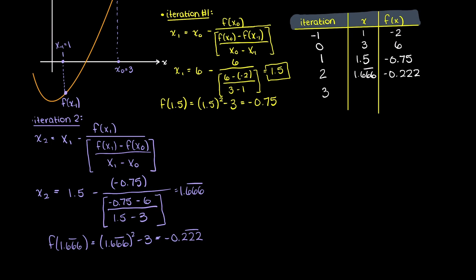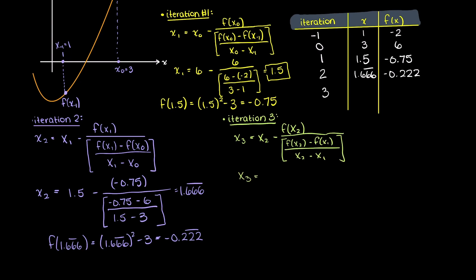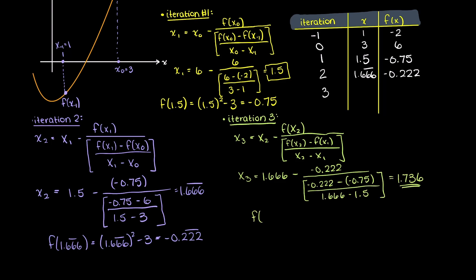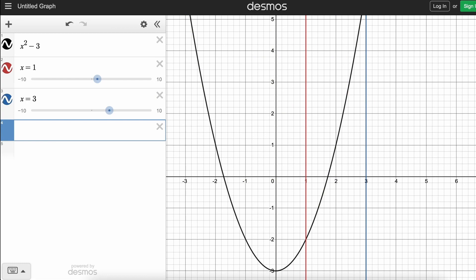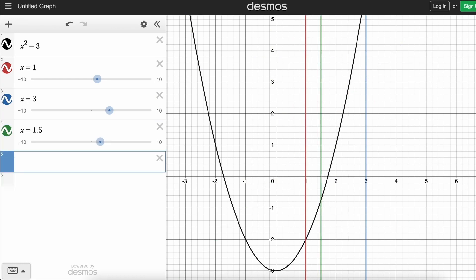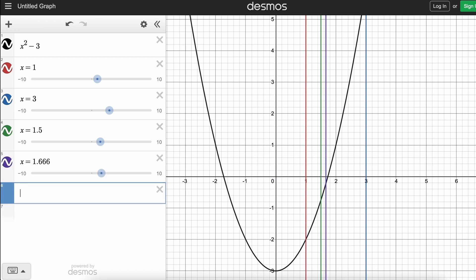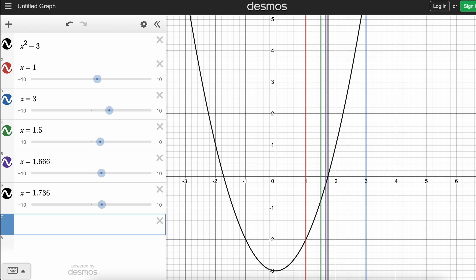Then for our final iteration we will do the same thing. Filling in all our variables, we are left with 1.736 as our final answer. Let's just enter our various iteration x values into our Desmos graph. You can see that with every iteration we are getting closer to the root. This proves that we are done and that our function is converging through the secant method.